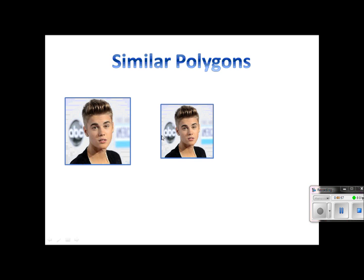The only difference is that each one of these sides are smaller. And if we were to set them up and compare them, they would all have the same ratio or scale factor — or we could also say that they are proportional. This is another similar square. All of the angles are still 90 degrees, but the sides are smaller, and they have the same ratio or scale factor.